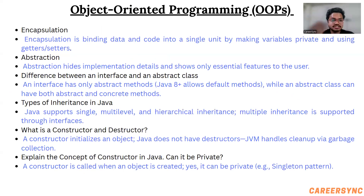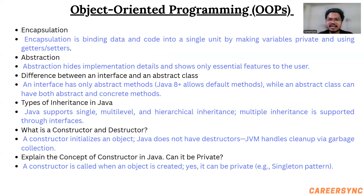What is encapsulation? Binding the data into a single unit is known as encapsulation. In abstraction, we hide implementation details and show only the essential parts to the user. What is the difference between an interface and an abstract class? An interface has only abstract methods, while an abstract class can have both abstract and concrete methods. What are the types of inheritance? Java supports single, multi-level, and hierarchical inheritance, and multiple inheritance is supported through interfaces.